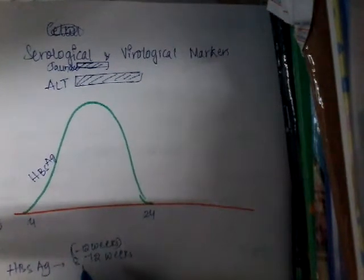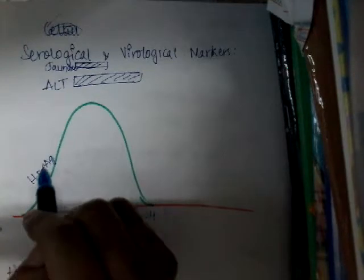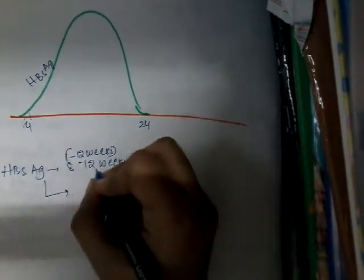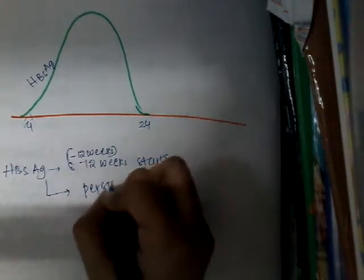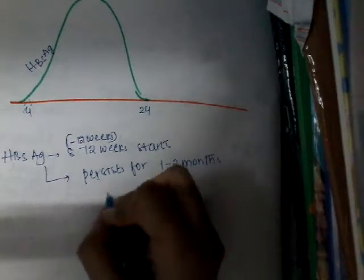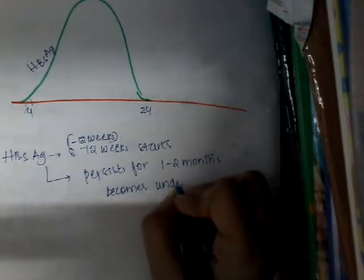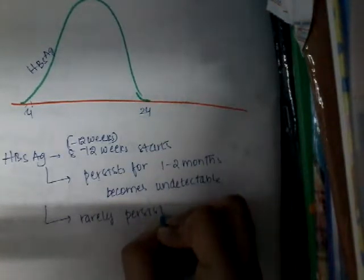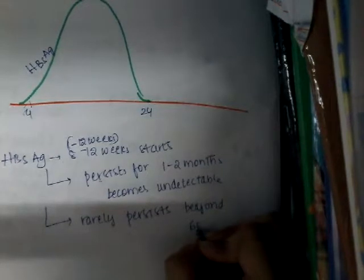HBsAg also becomes detectable 1 to 2 months after the onset of jaundice and rarely persists beyond 6 months. It starts at 8 to 12 weeks, persists for 1 to 2 months, then becomes undetectable. This is about acute hepatitis infection.